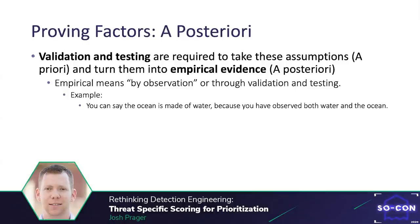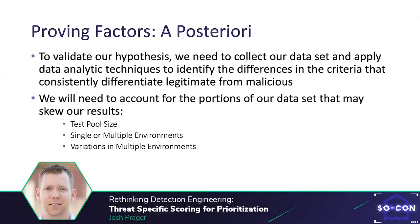Now that we've established our hypothesis and the factors we might want to include, we have to identify the likelihood of these being malicious or good indicators. We're going to test these hypotheses with validation and testing, using data analytic approaches to turn these hypotheses into empirical evidence — meaning validated by observation, through validation and testing. To validate our hypothesis, we need to collect our data set and apply data analytic or statistic-based techniques to identify the differences in criteria that consistently differentiate legitimate from malicious.